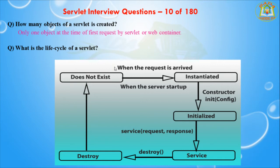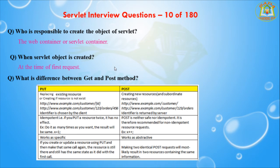These are the different lifecycle stages of the servlet: the first is loaded, the second is instantiated, the third is initialized, the fourth is service, and the fifth is destroyed. The next question is: who is responsible to create the object of the servlet?